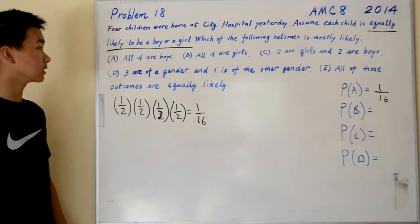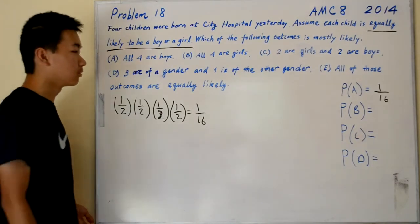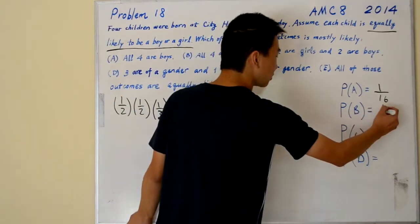Choice B is all four are girls. That's the same thing as all four are boys. So probability of B is also one over sixteen.